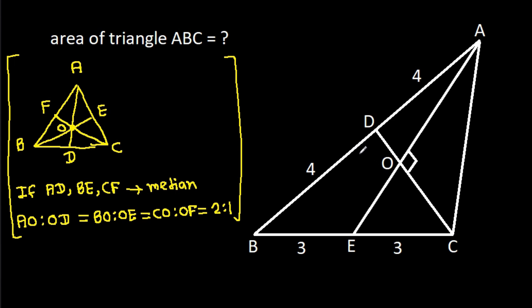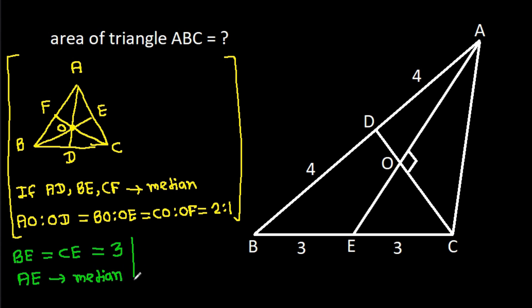Here, we have BE equal to CE, that is 3. That means AE is a median. And also, we have AD equal to BD, that is 4. That means CD is a median.